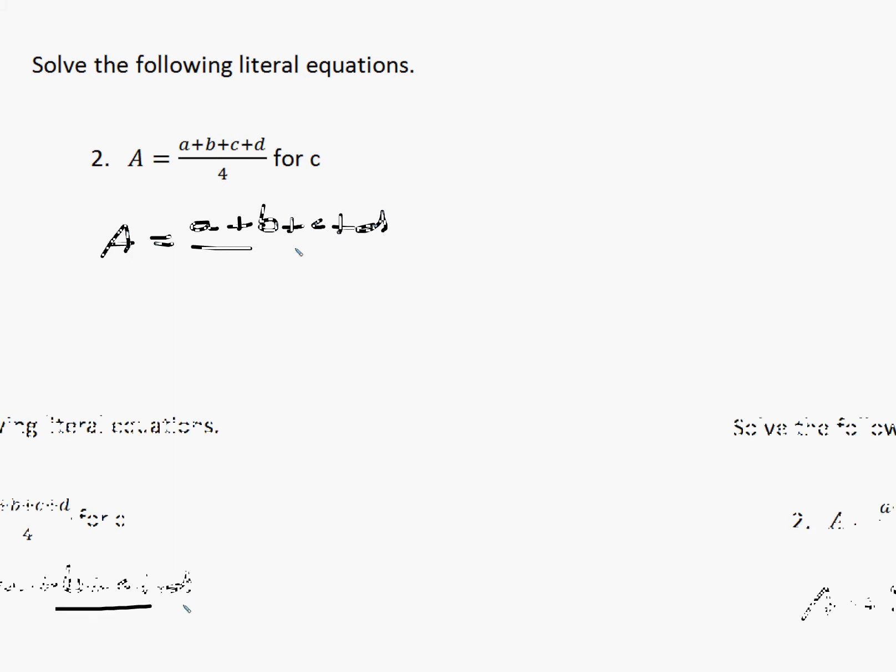So what we're going to do is multiply both sides by the common denominator. In this case that common denominator is 4. We're going to multiply both sides by 4 to eliminate that fraction, and that's what we do when we have denominators.